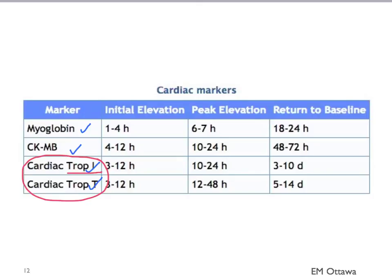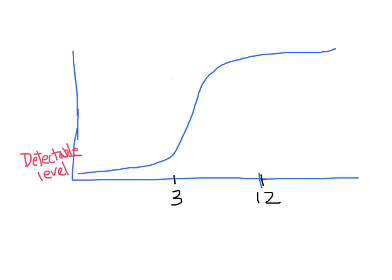Troponin takes a few hours to be released into the bloodstream. It will peak in a day or two and take about two weeks to return to baseline. The important thing is that it takes a few hours for troponin to show up in the bloodstream. It can be something like this graph. You can see here it takes at least three hours, if not up to 12 hours, for the blood test to show up in the bloodstream at a detectable level. By 12 hours, the cardiac markers should all be in the bloodstream.